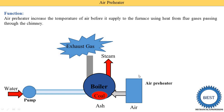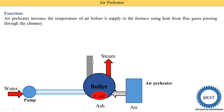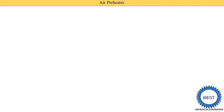Instead, by installing the air preheater, the air coming from the atmosphere first passes through the air preheater and then goes into the boiler. The exhaust gas from the chimney comes into the air preheater, heats the air, and then goes to the atmosphere or into another device like the economizer.